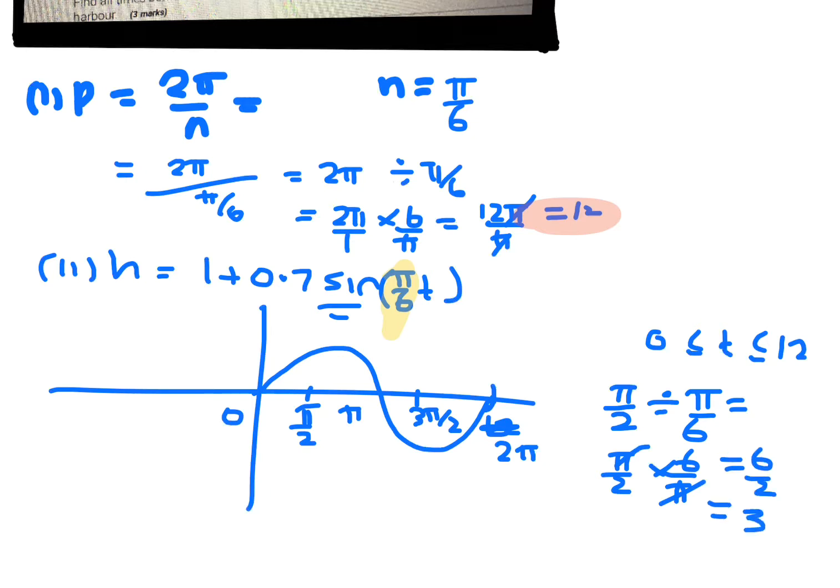So instead of having π on 2 there, you would have had 3. So that would be 3. And instead of having the π, π divided by π on 6, it's π times 6 on π. The π's will go out and you get 6.